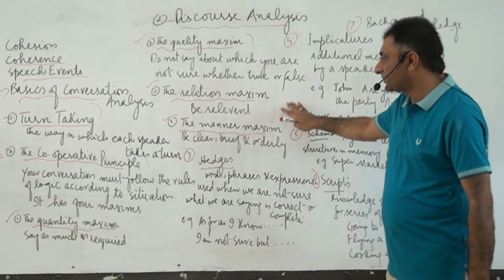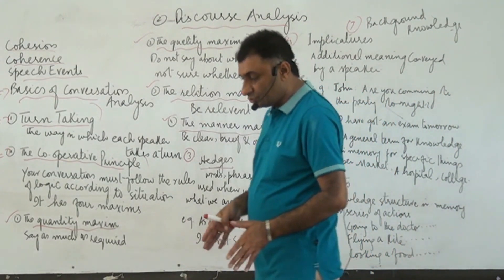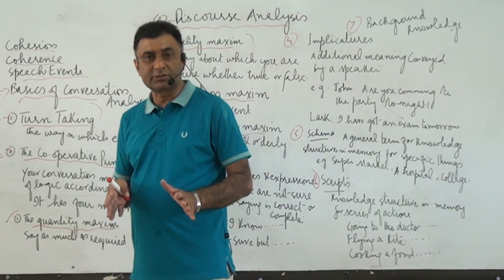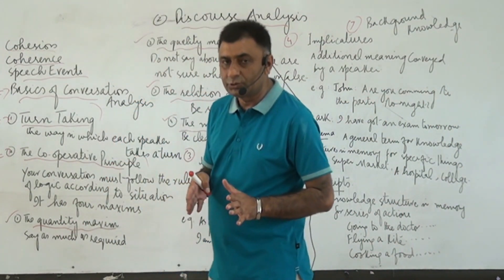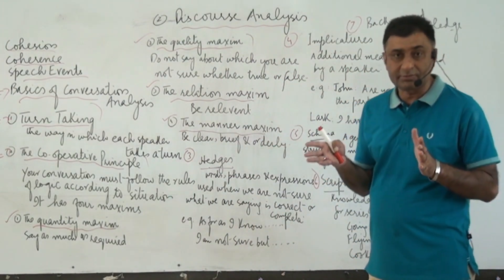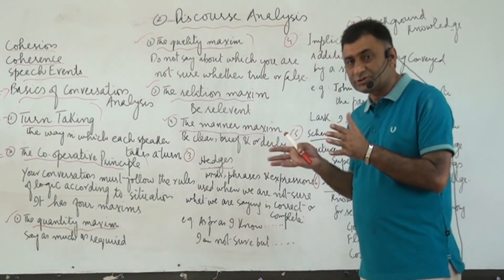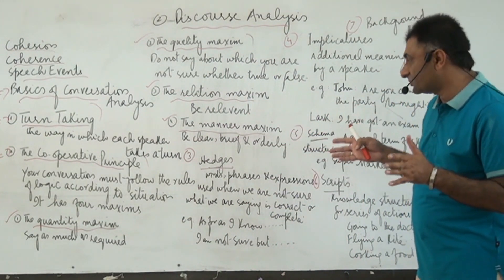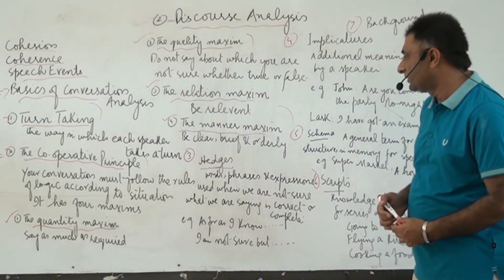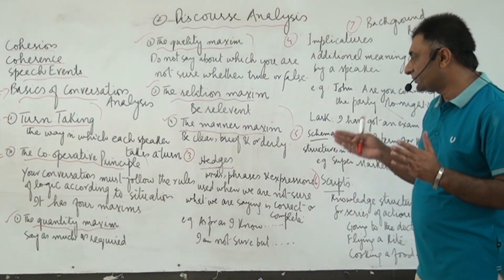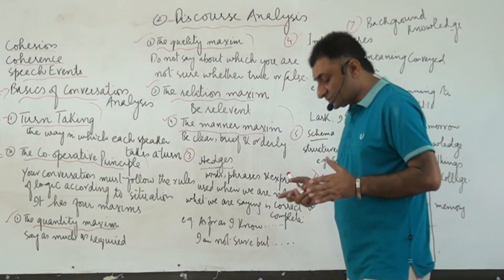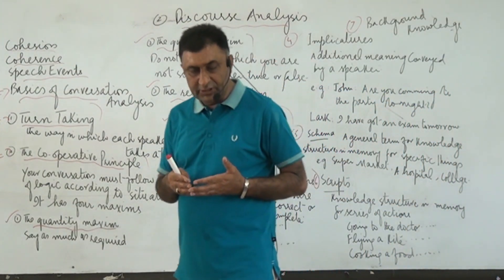The third is the relation maxim. Relation maxim means that you must be relevant. Don't be irrelevant. Whatever you are doing with reference to conversation, be relevant — irrelevant things disturb and mar the situation and the personality of the speaker. The fourth is the manner maxim, which means one must be clear, brief, and orderly.